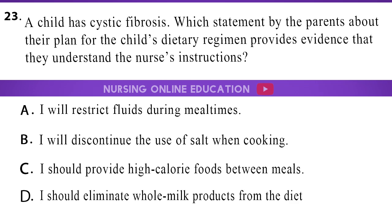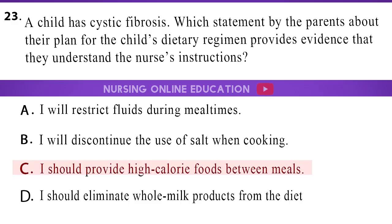Question 23: A child has cystic fibrosis. Which statement by the parents about their plan for the child's dietary regimen provides evidence that they understand the nurse's instructions? A. I will restrict fluids during mealtimes. B. I will discontinue the use of salt when cooking. C. I should provide high-calorie foods between meals. D. I should eliminate whole milk products from the diet. The answer is option C: I should provide high-calorie foods between meals.